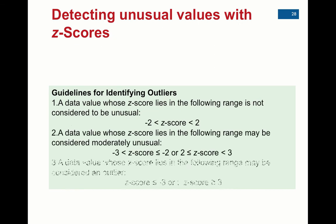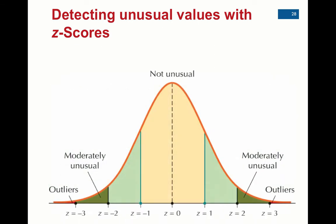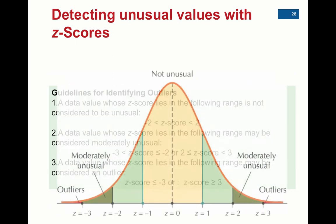We can also detect unusual values with z-scores. On a normal distribution, anything within 2 standard deviations of the mean is considered usual - most people's heights or SAT scores fall within 2 standard deviations of the mean. When you get beyond 2 standard deviations, we look at that as moderately unusual. If you're beyond 3 standard deviations, we call that very unusual. We're not necessarily calling them outliers - we'll use a different definition for that - but anything beyond 3 standard deviations is very unusual.